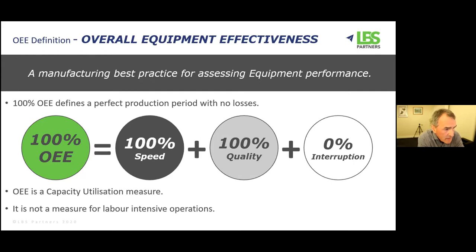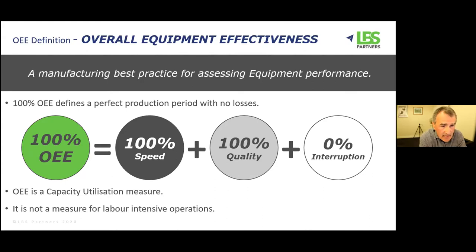Therefore, OEE is a capacity utilization measure. We can see what our installed capacity is, even though we might not be availing of all of that capacity. OEE should not be used for labor-intensive operations. If you're doing a manual assembly operation, for example, OEE is not the right measure — there are other things we can do there, but not OEE.